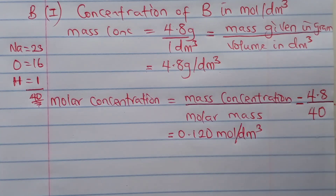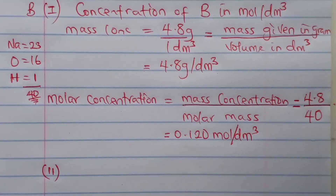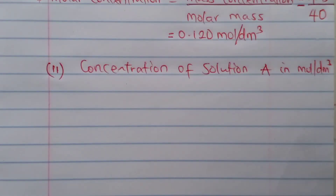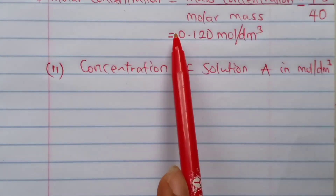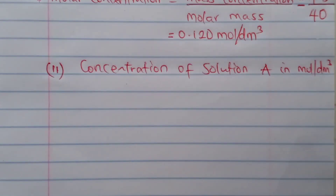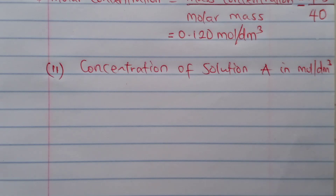Now let's go for BII. Since we have actually gotten our CB, and we already know NA/NB which equals 1 from the balanced equation, and we also know VA to be 28.6 — approximately to 3 significant figures — we can actually find the concentration of solution A, which is CA, using the formula.